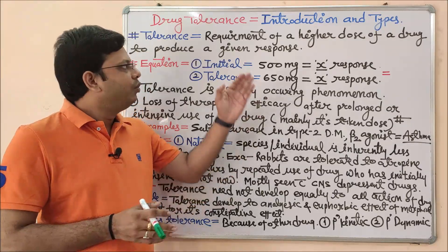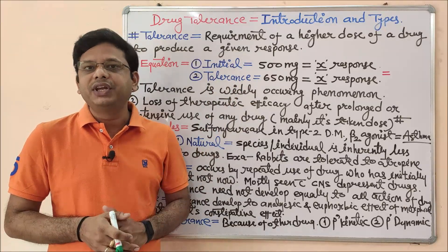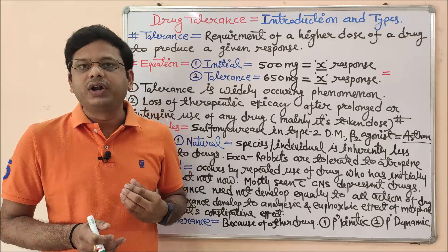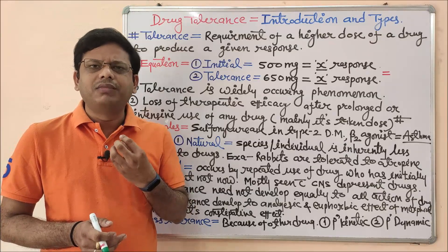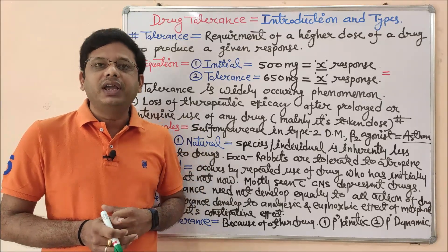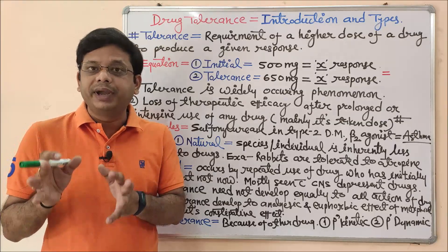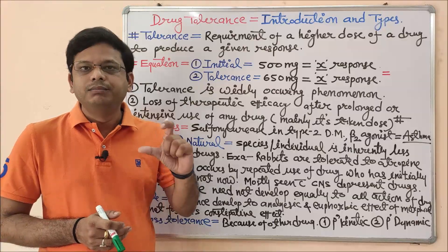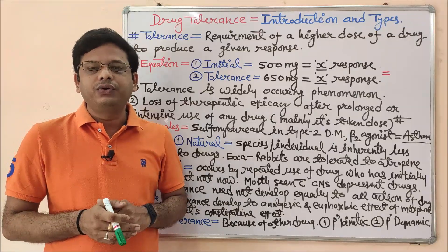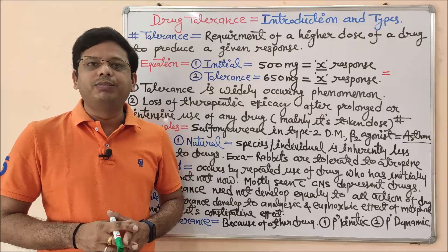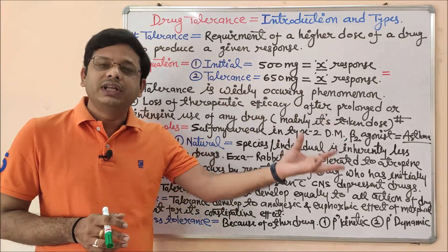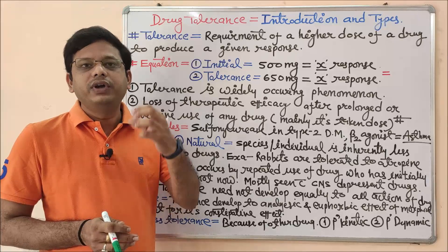Let me clarify with a more relevant example. When you first apply a mild pain balm like Vicks VapoRub, it gives relief from chest congestion and mild headache. But if you continuously use Vicks VapoRub, it will no longer produce any therapeutic effect. Then you move to Zandu Balm, then to One Ultra — the red bottle. This means if you continuously use any drug, after some time that drug will not produce the same effect as it used to produce earlier.